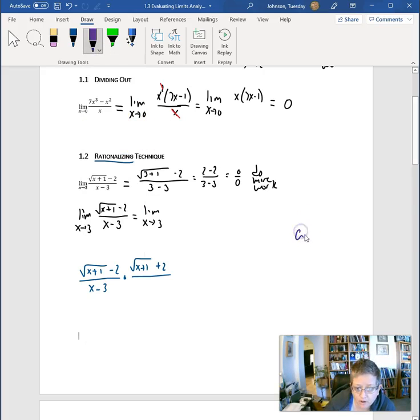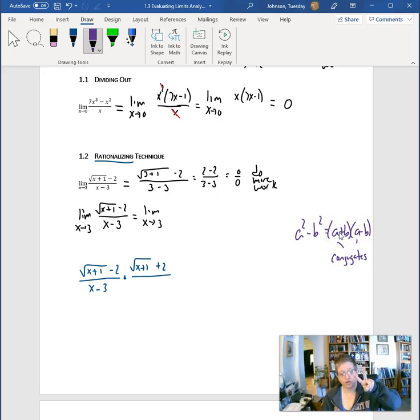In purple, we know that a squared minus b squared is equal to a plus b times a minus b. So we're using this idea of difference of squares. These two are called conjugates of each other because the sign in the middle is opposite.